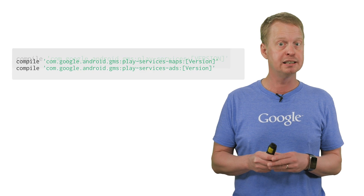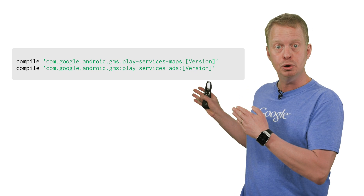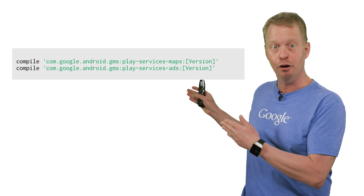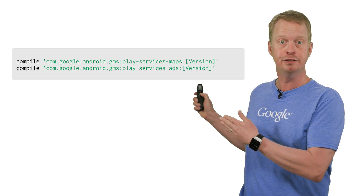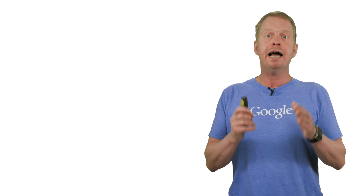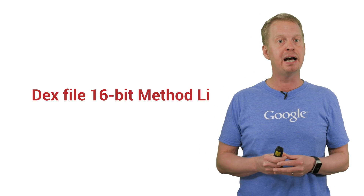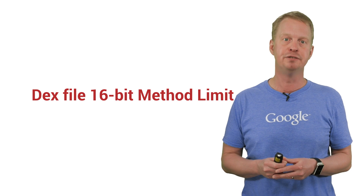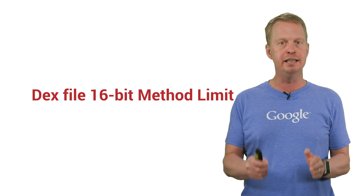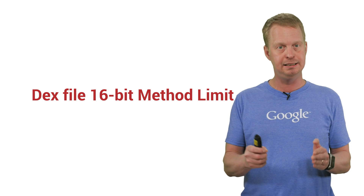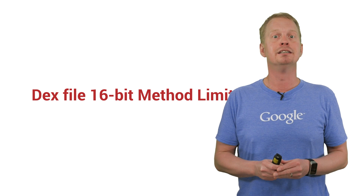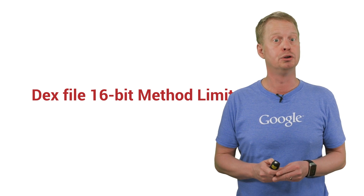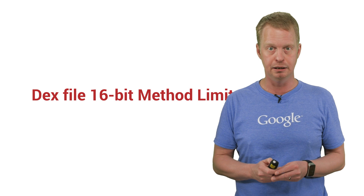Here's an example Gradle build file that only uses the Maps and Ads API of Google Play Services. While there are many aspects and ways to manage the 16-bit method limit of DEX files, this should make it easier to keep your app lean since you select the APIs you want to include in your build.